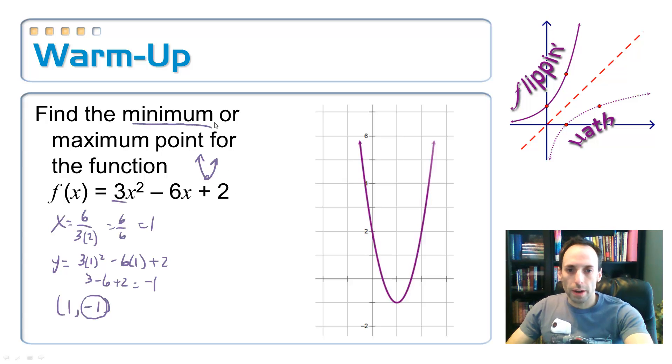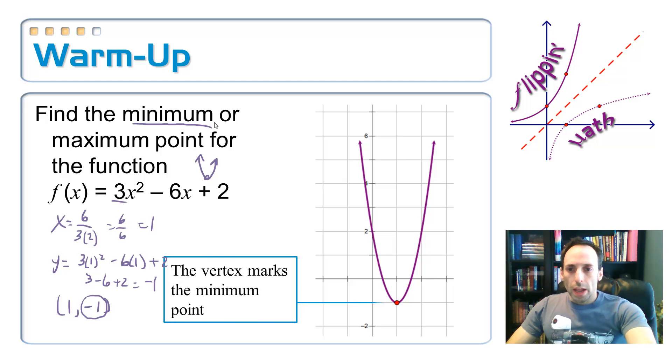So, let's take a look here at the graph. There it is, and exactly where I told you it was going to be, at (1, negative 1), and that vertex point marks the minimum point on that graph.